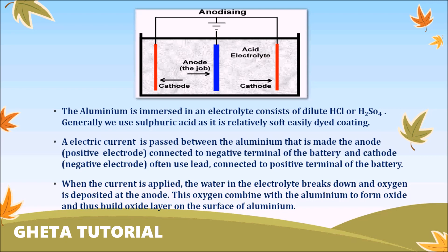The anodizing process is not only used for forming oxide layers on aluminum articles, but it is also used to make aluminum articles more attractive. For making the aluminum articles more attractive, you can pour some colors like red, pink, blue, or green into the electrolyte, and that makes the aluminum articles more attractive.